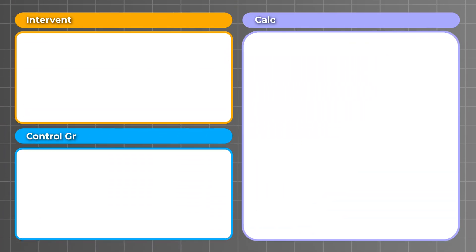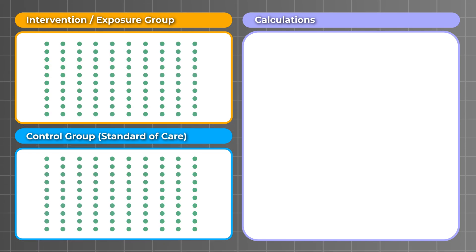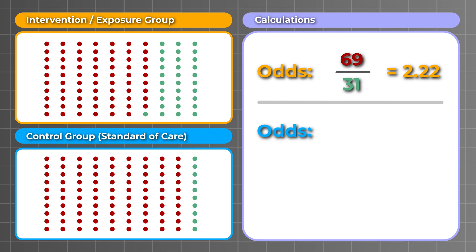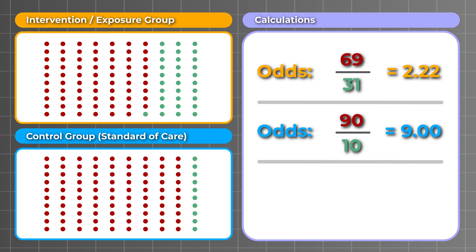Now that we understand the difference between risks and odds, let's calculate our odds ratio. To do that, we're dividing the odds in our exposure group by the odds in our control group. We've already calculated the odds for our exposure group to be 2.22, and we know that for standard of care, 90 patients had an event, whereas 10 did not have an event. So, our odds for the control group are 90 over 10, which equals 9. Therefore, our odds ratio is 2.22 divided by 9, which equals 0.25.